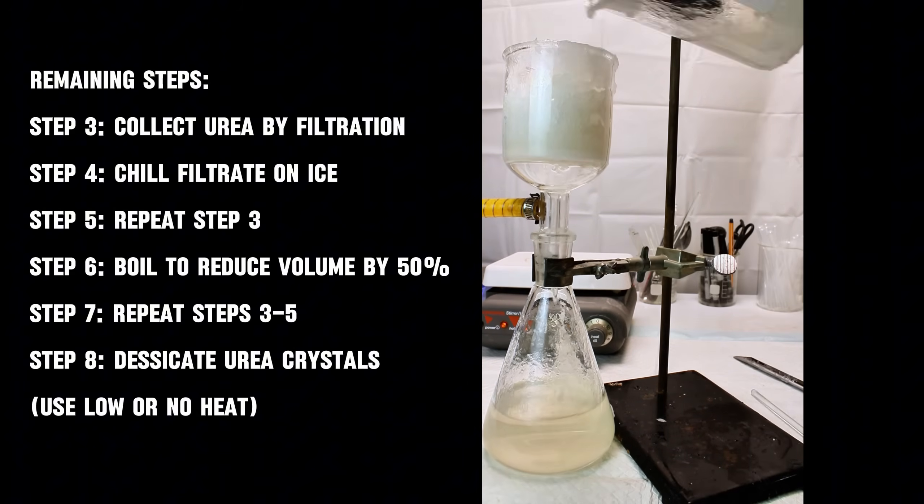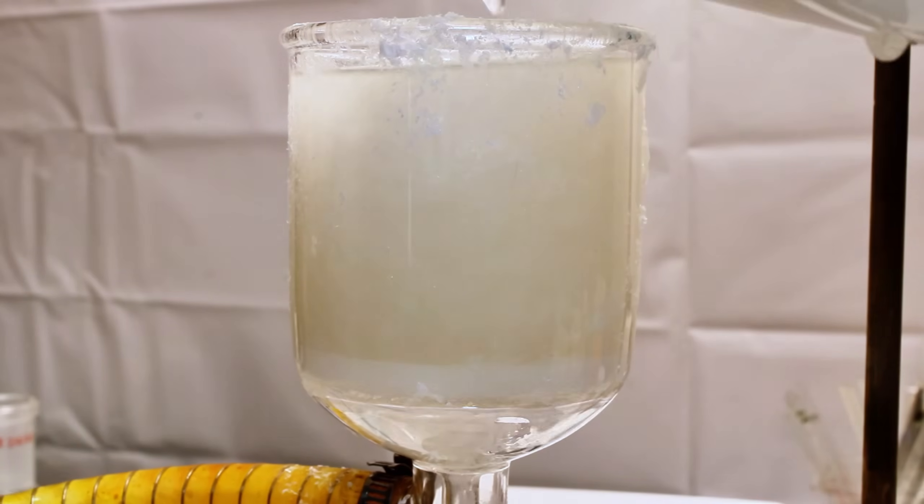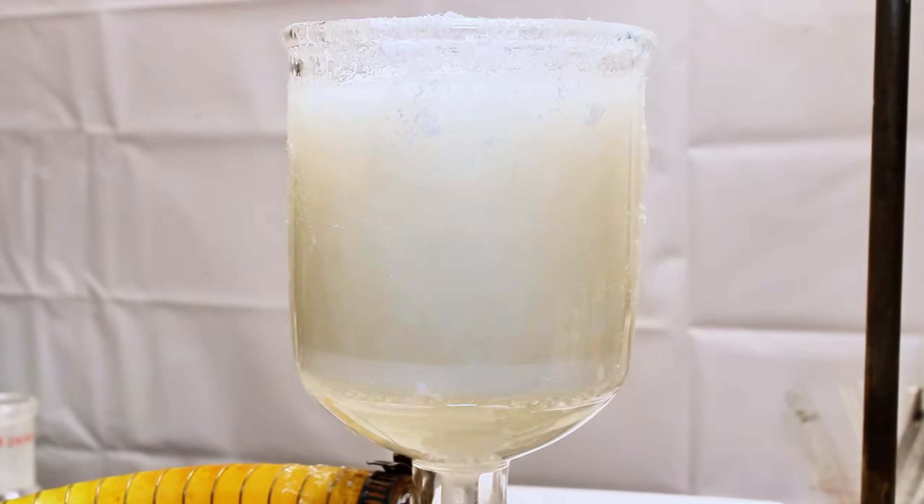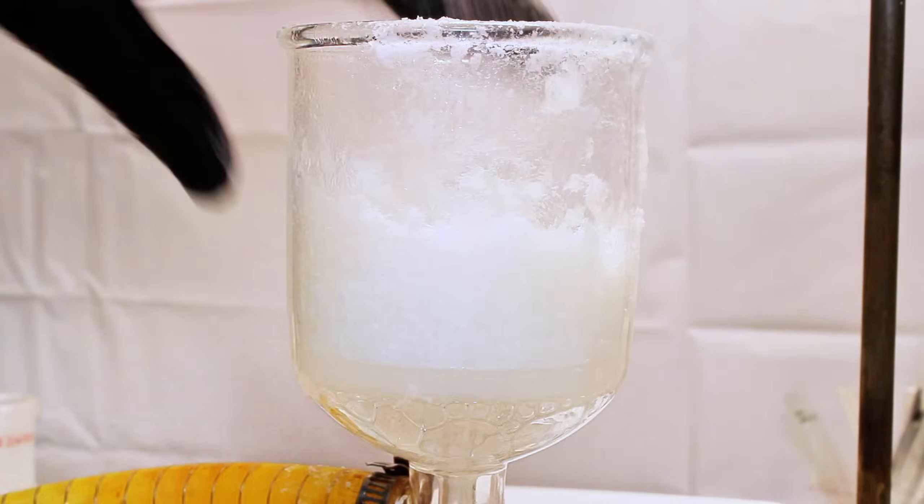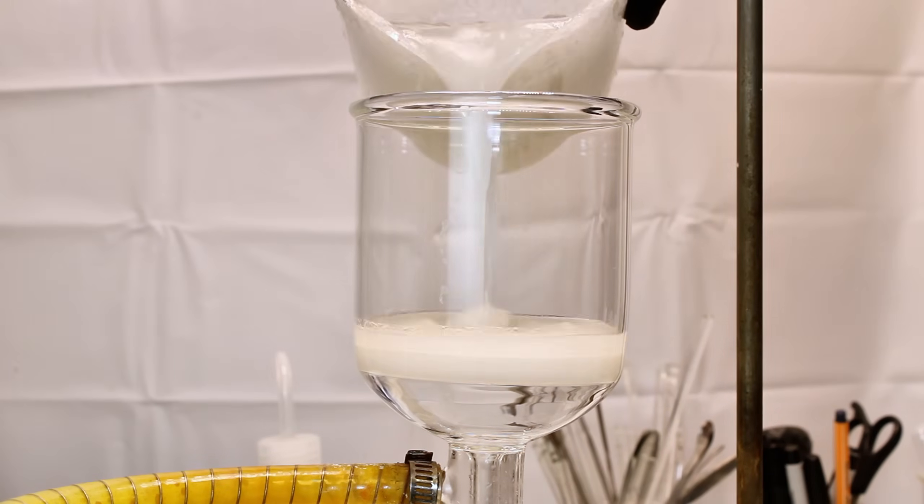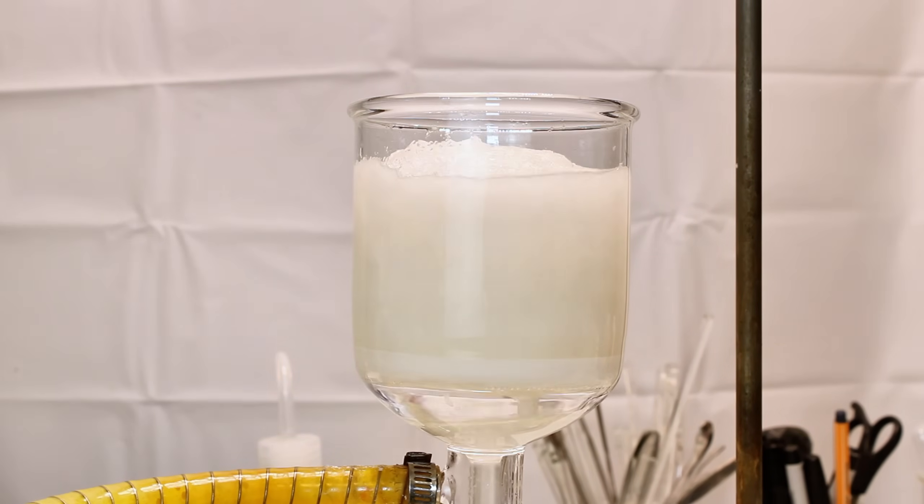The resulting filtrate is next cooled to near freezing and the process is repeated. To get as much urea as possible, I then boiled this second filtrate down to around half of its initial volume and repeated the above recrystallizations.